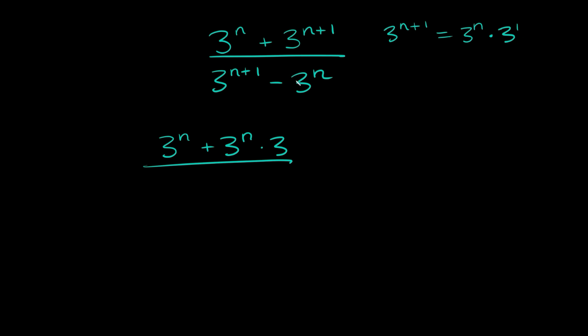And then that's going to go over the denominator, which again we can rewrite this just like that. So 3 raised to the n times 3 raised to the first minus 3 raised to the n. So now that we've broke that down a little bit,